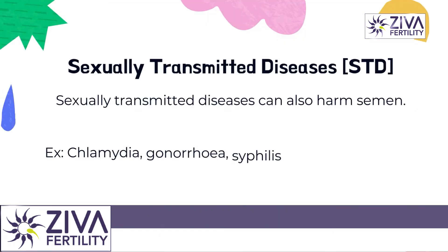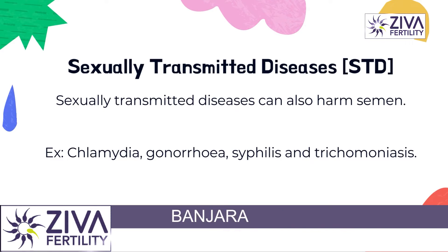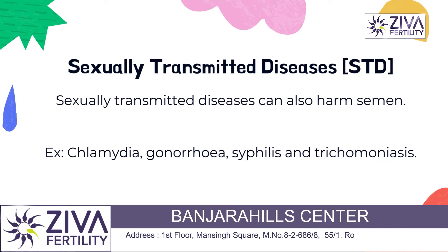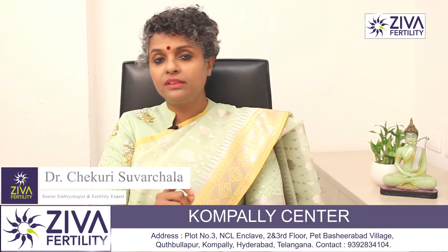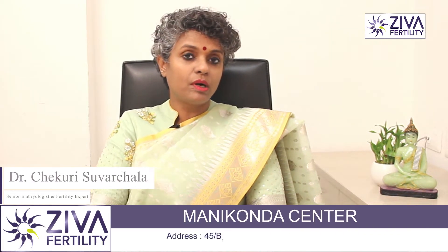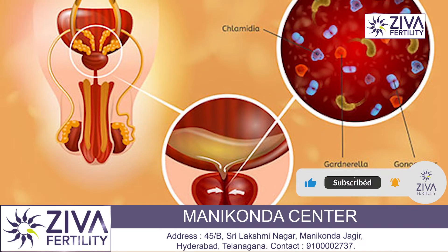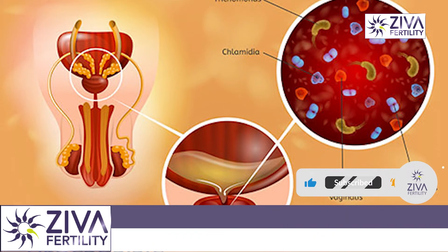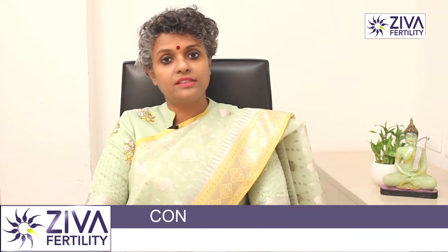STD, or sexually transmitted diseases — chlamydia, gonorrhea, syphilis — all these infections are bacterial infections and they cause problems in the genital area. Sexually transmitted diseases can also cause harm to the sperms by causing infection of the semen. Various parts like the prostate or seminal vesicles can all be affected by STDs.